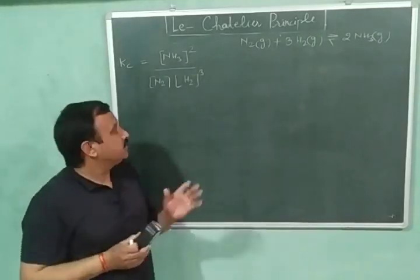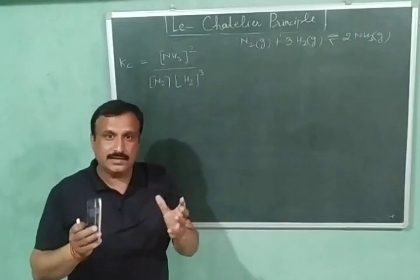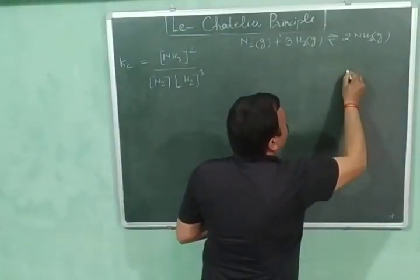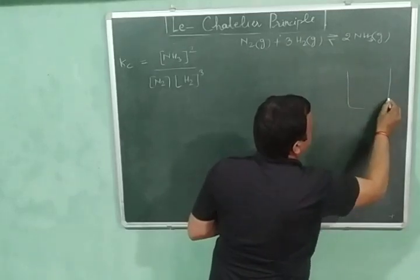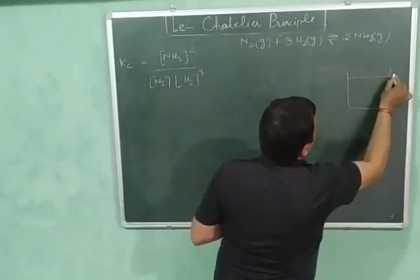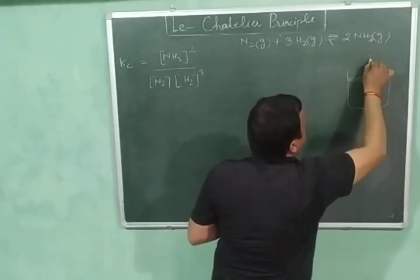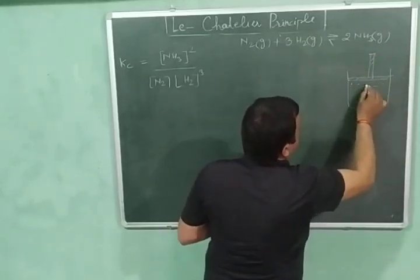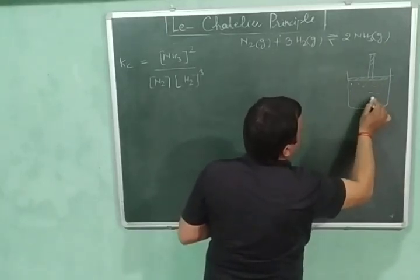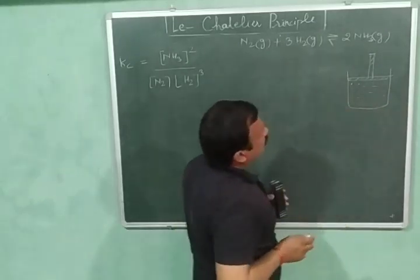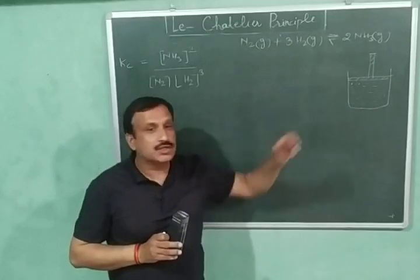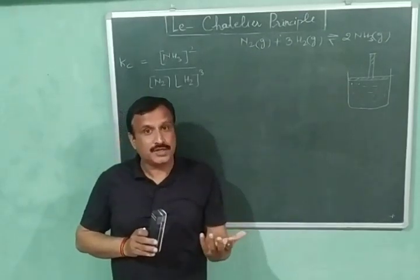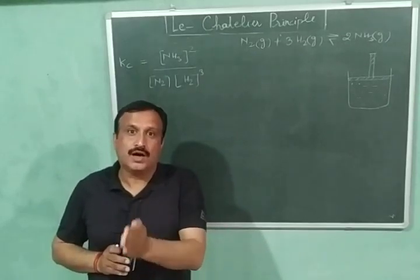Let us consider that this reaction mixture is contained in a cylinder fitted with a frictionless piston. Here we have this cylinder fitted with a weightless frictionless piston, and the equilibrium reaction is taking place inside. If I increase the pressure on the reaction mixture, then the volume of the reaction mixture will be decreased. If I double the pressure, then the volume will be reduced to half of its initial value.